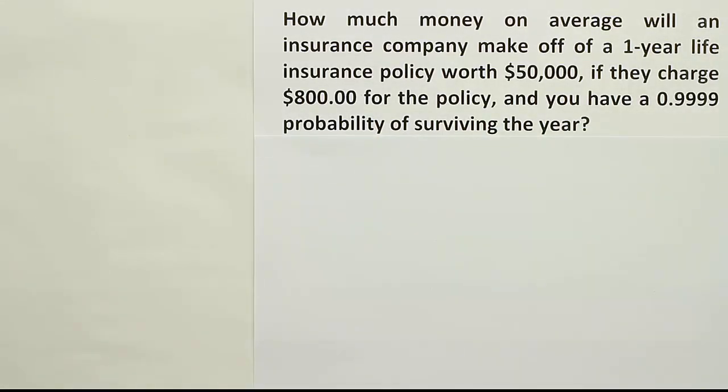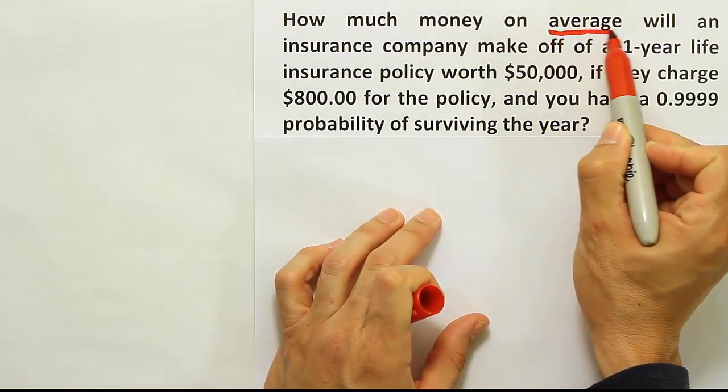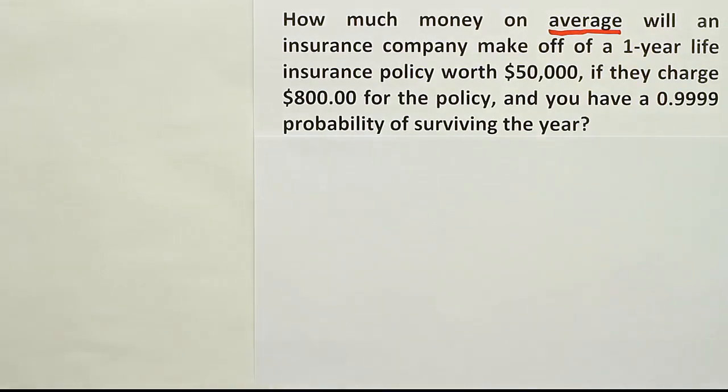Okay, so the first phrase I want to identify here is how much money on average will an insurance company make? How much money on average is a classic phrase to indicate expected value because expected, we think of average, so the average thing is the expected thing. And value, of course, there's no better word for that than money.